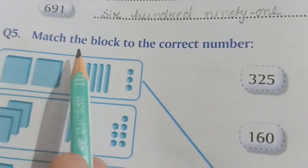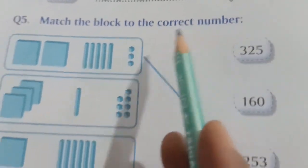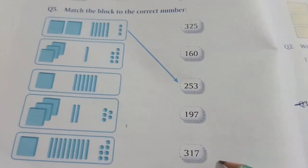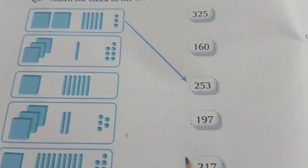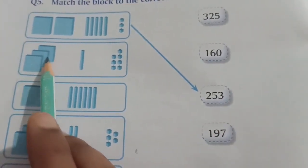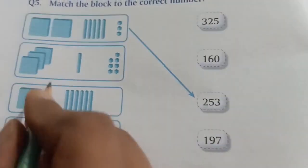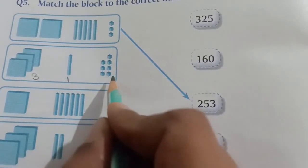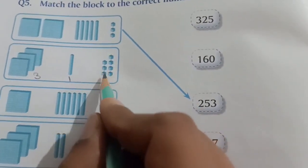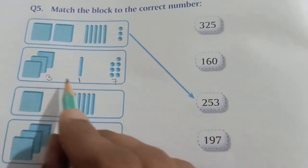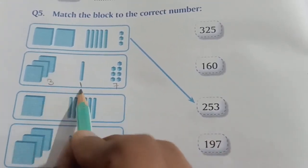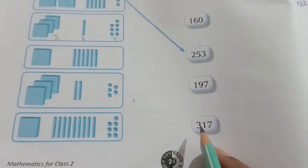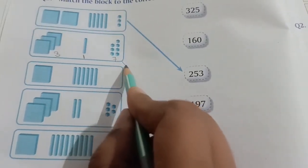Question number five: Match the block to the correct number. Blocks are given here and numerals are given here — we have to match each to the correct number. Here we can read three hundreds, one ten, and one, two, three, four, five, six, seven — seven ones. So that gives us three hundred seventeen. We find 317 here and draw a matching line.